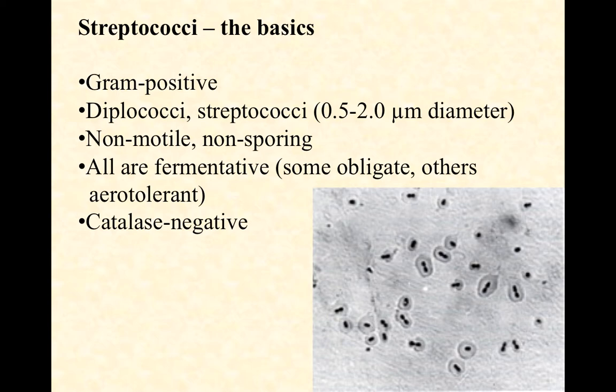All the streptococci are fermentative. Some are obligate fermenters — obligately anaerobic, and oxygen is toxic to them. Others are air-tolerant; they can handle the oxygen but still end up fermenting. The catalase test is a nice handle for distinguishing streptococci from staphylococci. Streptococci are catalase negative, and staphylococci are typically catalase positive. So if we've got a diagnosis narrowed down to either a strep or a staph, very quickly with a catalase test we can identify which we have.